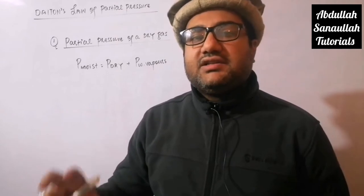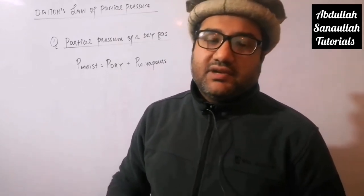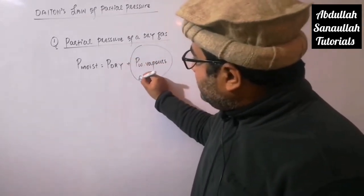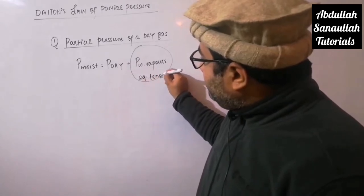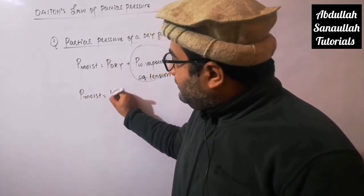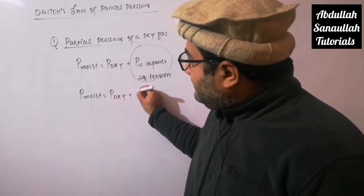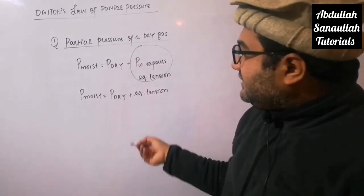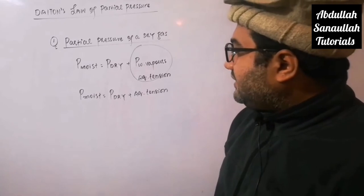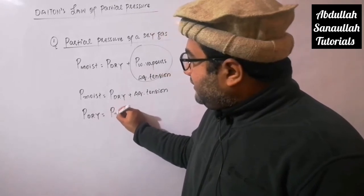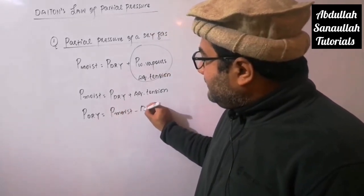These are the non-reacting ones, so the total pressure exerted by the moist gas will be equal to the partial pressure of the dry gas and the partial pressure of the water vapors. The partial pressure exerted by water vapors is also called aqueous tension. So: total pressure of moist gas = partial pressure of dry gas + aqueous tension. These two formulas are the same — just the wording is different. The partial pressure of dry gas equals the partial pressure of moist gas minus aqueous tension.